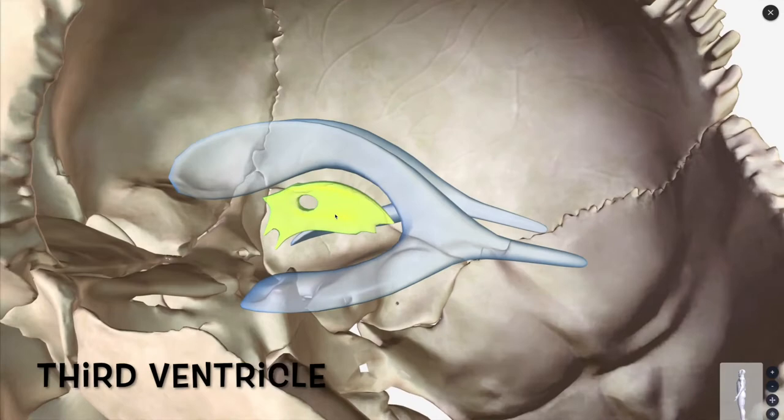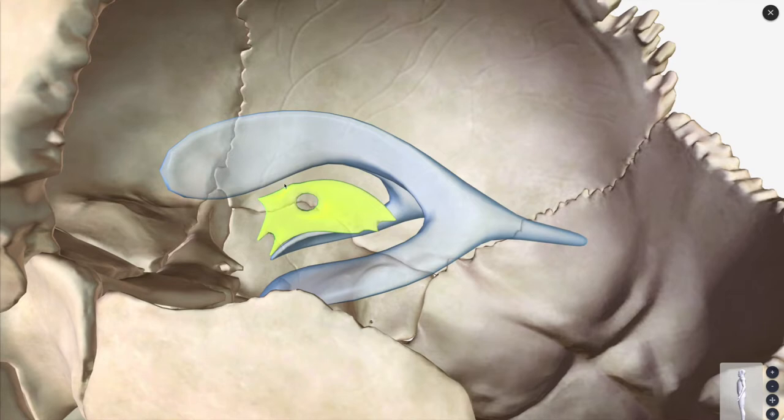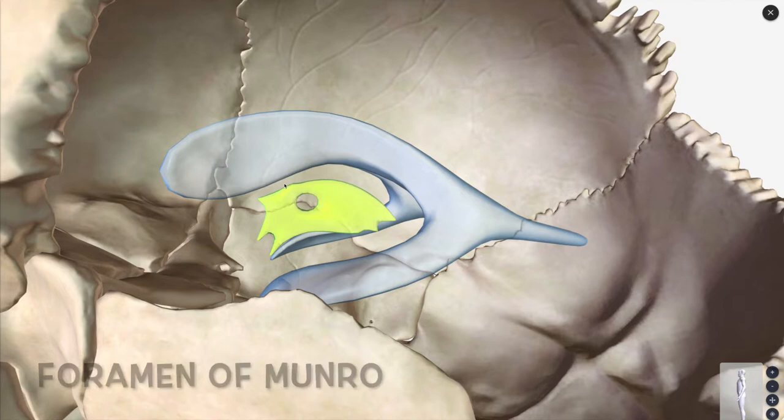What is the hole that it goes through to get to the third ventricle? That's going to be called your foramen of Munro. After it's gone through the foramen of Munro, it enters the third ventricle.